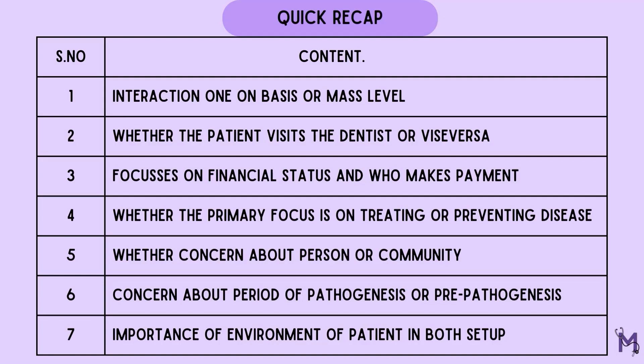Second, we talked about whether the patient visits the dentist or vice versa. The third point focuses on financial status and who makes the payments. Fourth, we discussed whether the primary focus is on treating or preventing a disease state. Fifth, we differentiated on the basis of whether we are concerned only with the person suffering from a disease or the community as a whole, irrespective of whether they are suffering or not. Sixth, in the private sector we are concerned with the period of pathogenesis, while a public health official is more concerned about the period of pre-pathogenesis. Lastly, we discussed the importance of the environment of a patient in both setups.